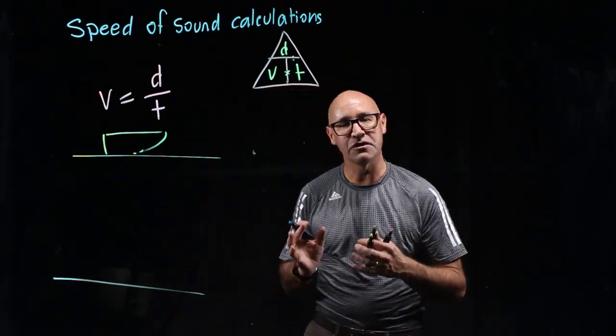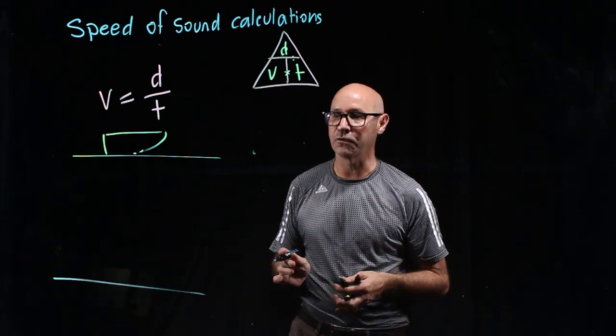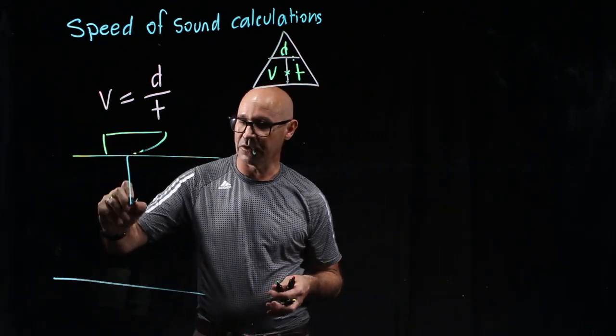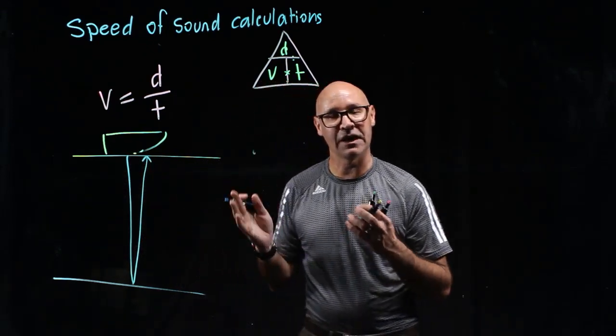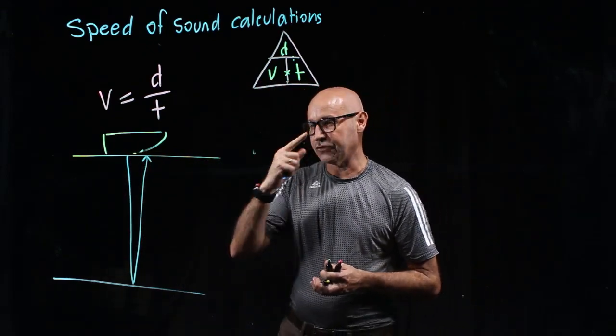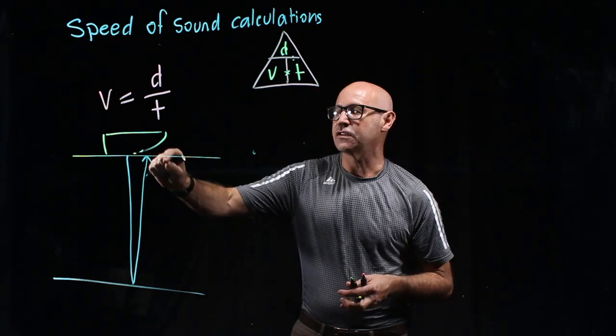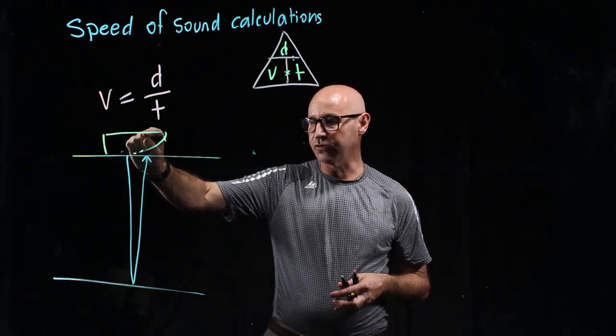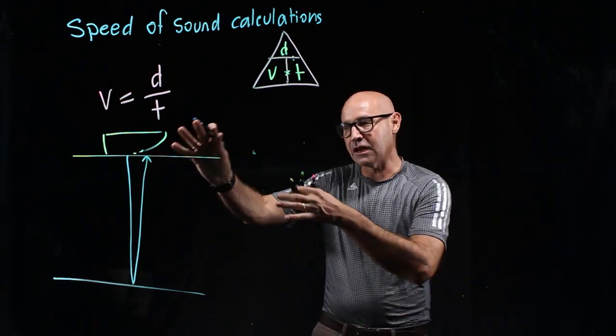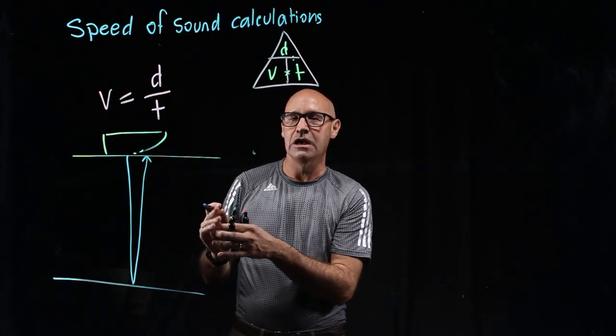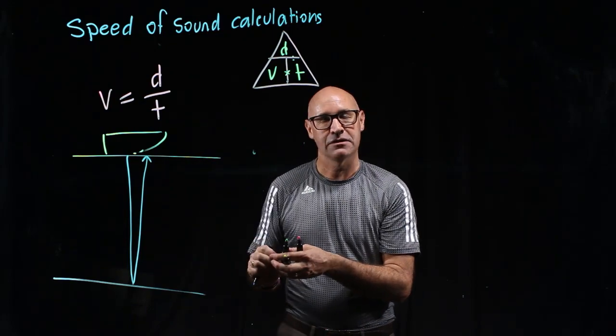So it sends a sonar, which is a pulse, an ultrasound pulse, down to the bottom of the ocean and then the pulse comes back up again. It's detected by the boat. The sonar instrument detects how long it took for that pulse to go down to the bottom and come back up again, and then it does calculations in its computer to work out how deep that ocean is.